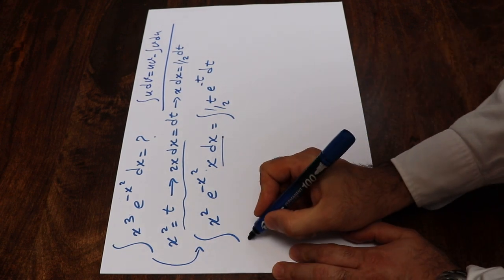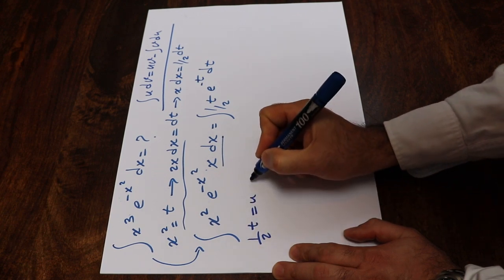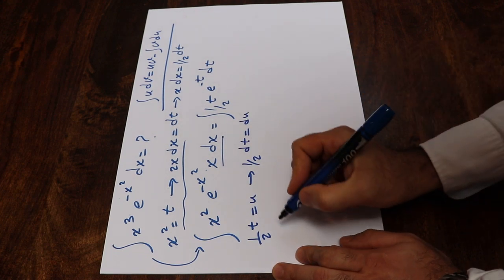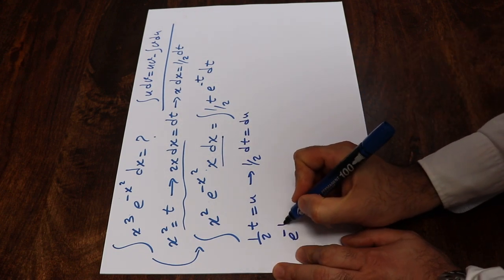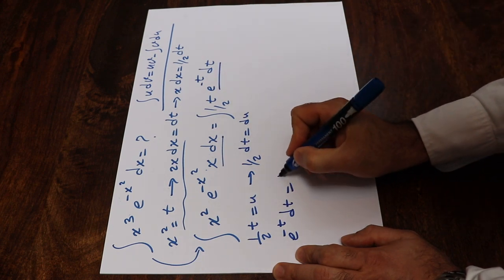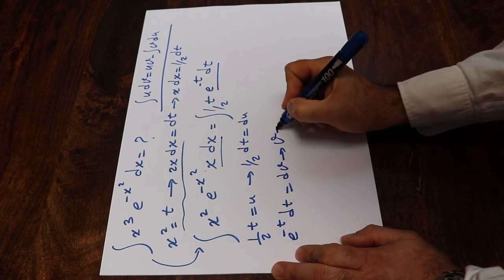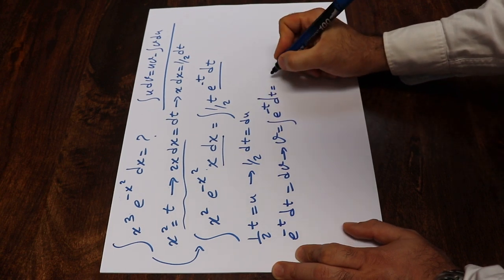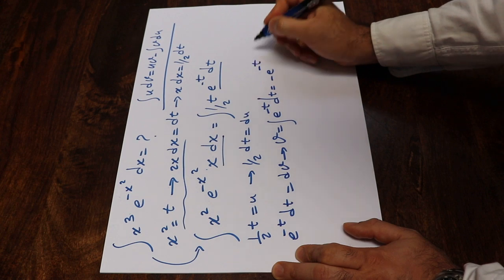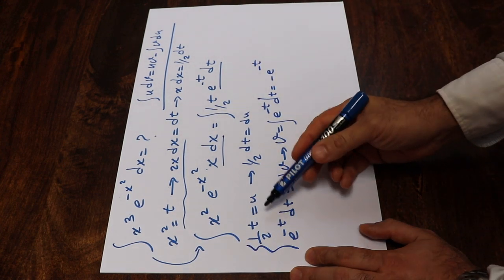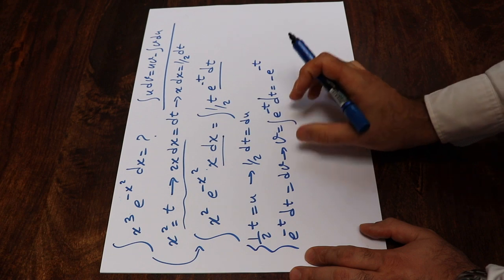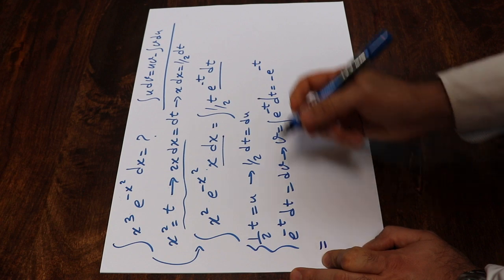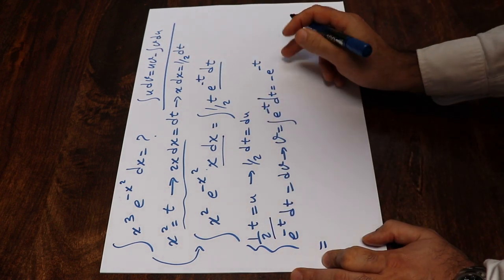Using this formula, let's define (1/2)·t as u. Therefore (1/2) dt will be equal to du. And let's define e^(−t) dt as dv. Therefore v will be equal to the integral of e^(−t) dt, which equals minus e^(−t).